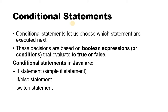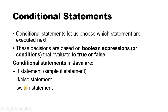Conditional statements are going to be executed based on a Boolean expression, which will return either true or false. In this, we are going to choose which statement will be executed next. Conditional statements in Java can be a simple if statement, an if-else statement, and a switch statement. We are going to discuss them one by one.